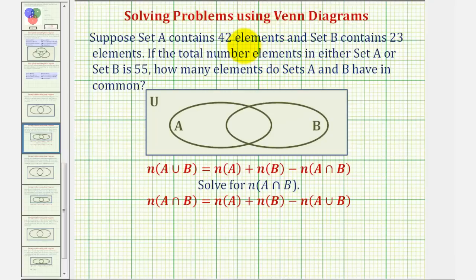We just solved this problem using a Venn diagram. Now we'll solve it using the cardinality formula for the union of two sets. This formula tells us the number of elements in A union B, or the number of elements in A or B, which would be the number of elements in this set here.